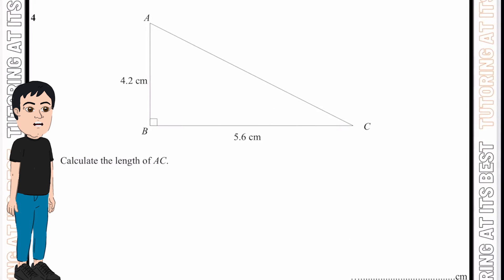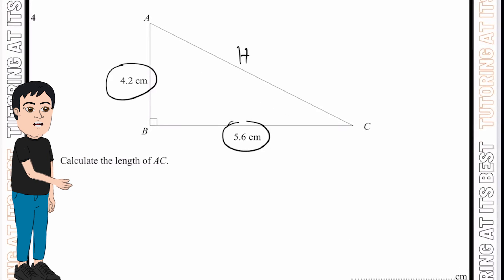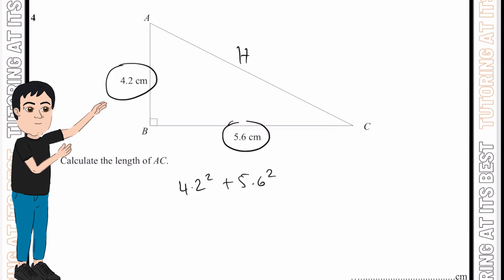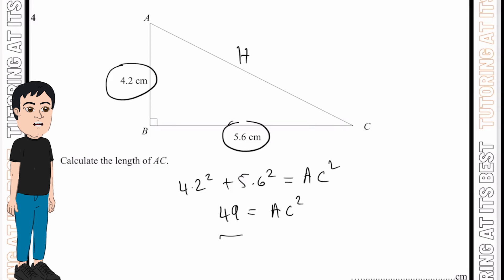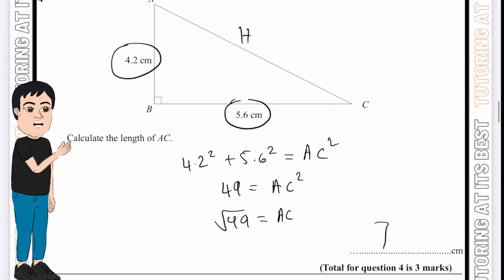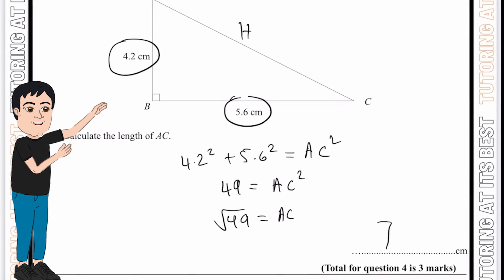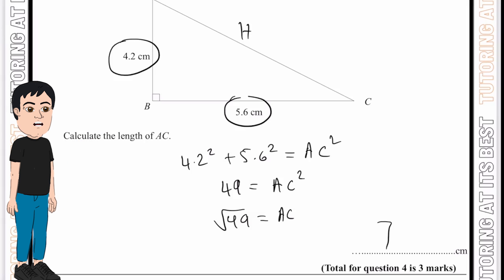Question four: calculate the length of AC, which is our hypotenuse. We add straight away: 4.2² + 5.6² = AC². That equals 49, so AC² = 49. Taking the square root: AC = 7. Feel free to pause the video at any time — keep going and you'll understand Pythagoras' theorem in no time.